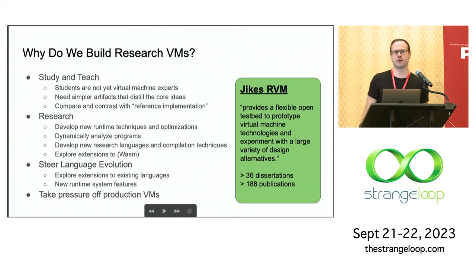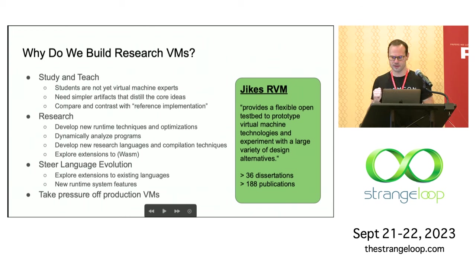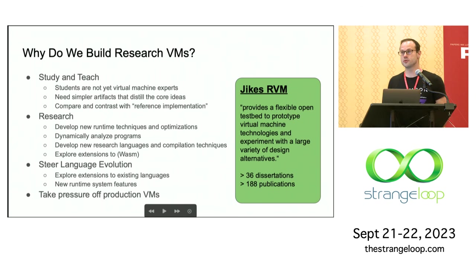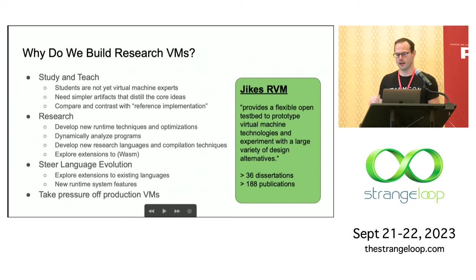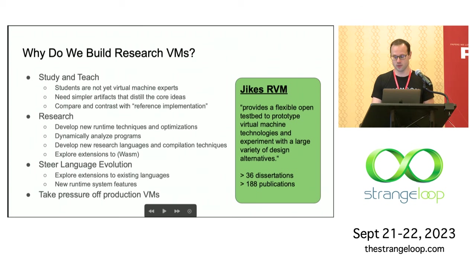There's a good example of this: Jikes RVM. Jikes RVM was a research system — their byline was it provides a flexible open testbed to prototype virtual machine technologies and experiment with a large variety of design alternatives. This is a highly successful research project. It originally started at IBM Research and then got picked up by academia. Their idea was to implement a Java VM that grad students could do things with, and that was borne out — almost 200 publications and at least 36 PhDs came out of it. We need a vehicle like that for WebAssembly.